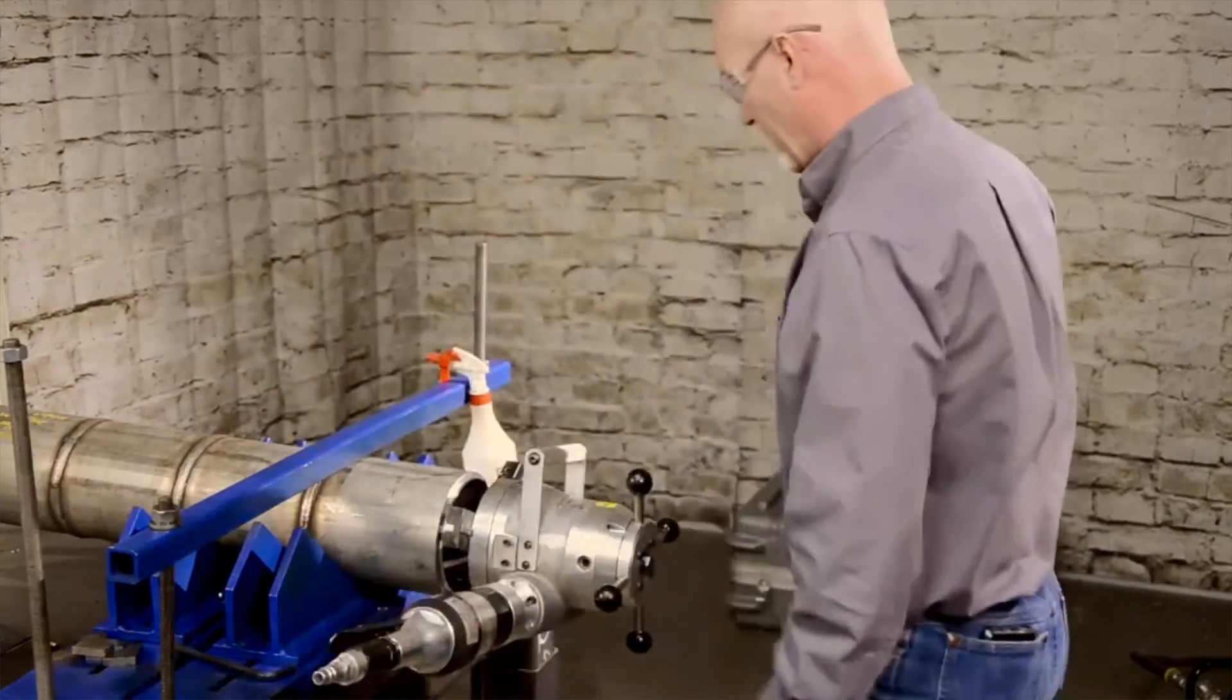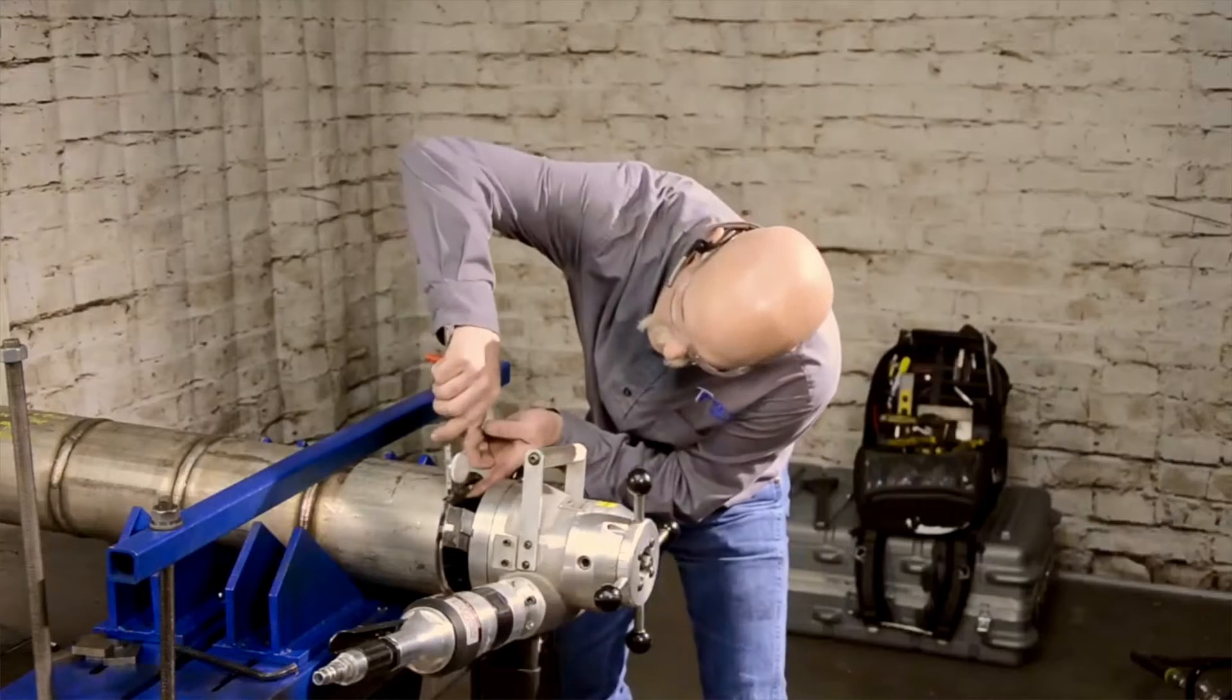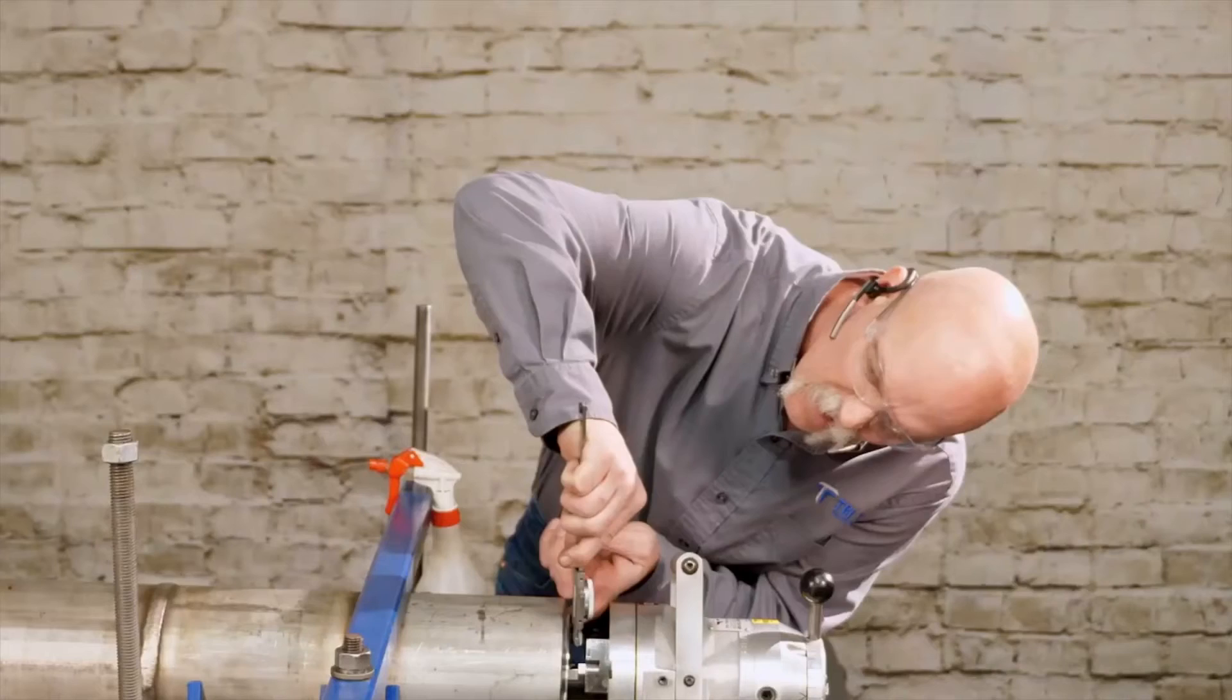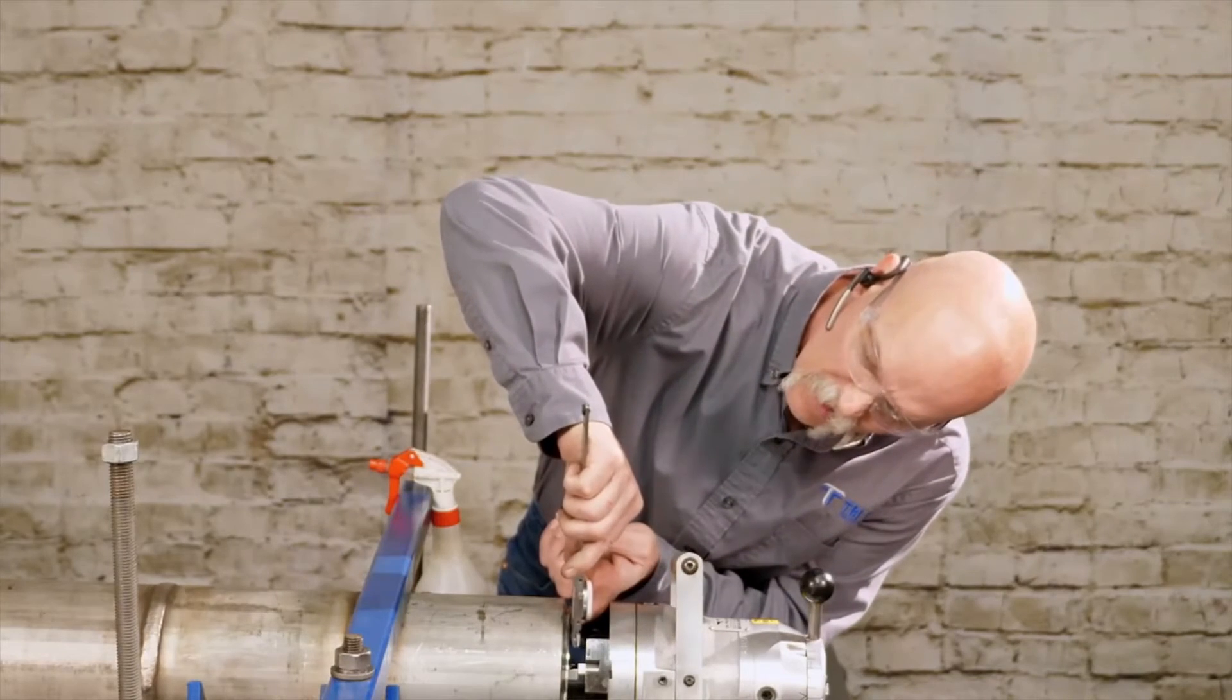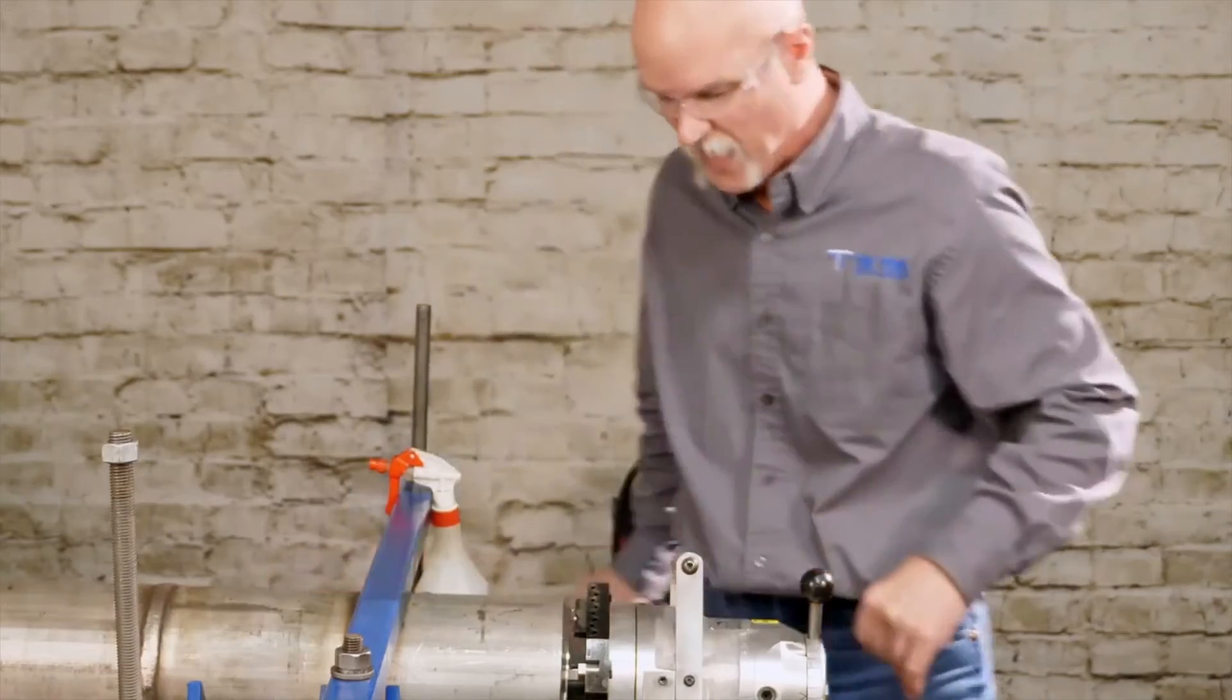Always remember to disconnect your air when you're moving the tooling. Take your calipers, measure our land thickness. We're aiming for 60 thousandths. We just happen to be at 70, so we need to go in 10 thousandths.